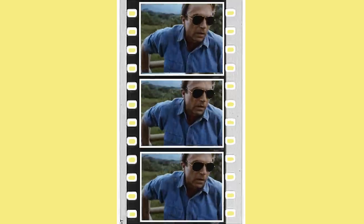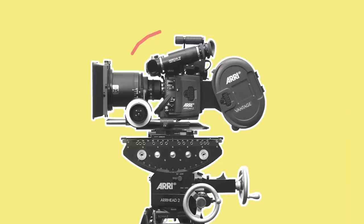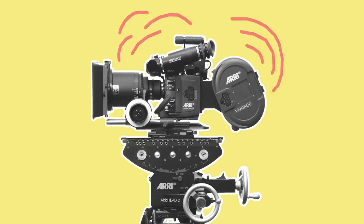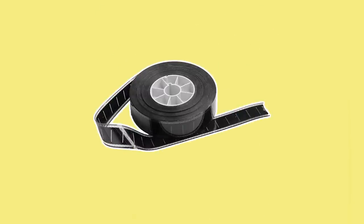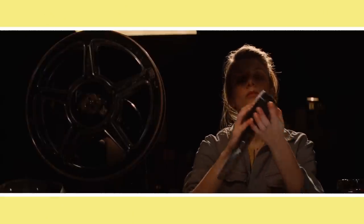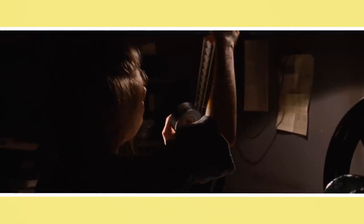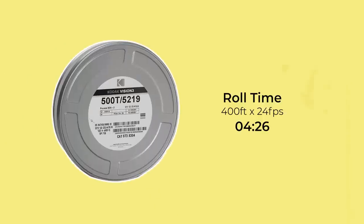A disadvantage of 4 perf is that more film runs through the camera faster, which makes it noisier. It also uses the most film out of the 35mm formats, meaning more money must be spent on buying film stock and developing it. A 400 foot roll of film will only be able to record for a mere 4 minutes and 26 seconds before a new roll must be reloaded into the camera.